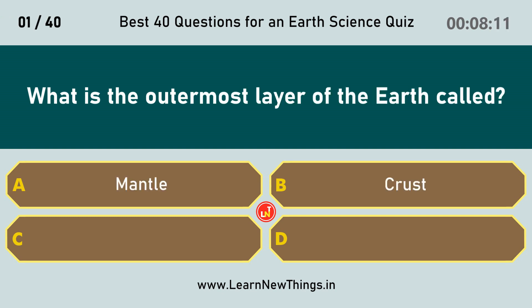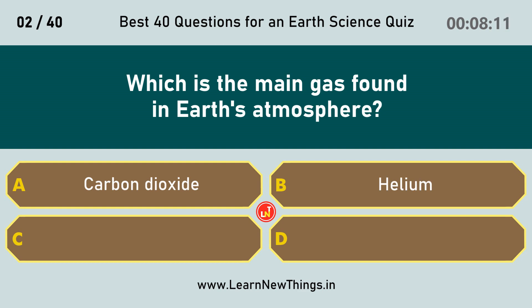What is the outermost layer of the Earth called? Crust. Which is the main gas found in Earth's atmosphere? Nitrogen.